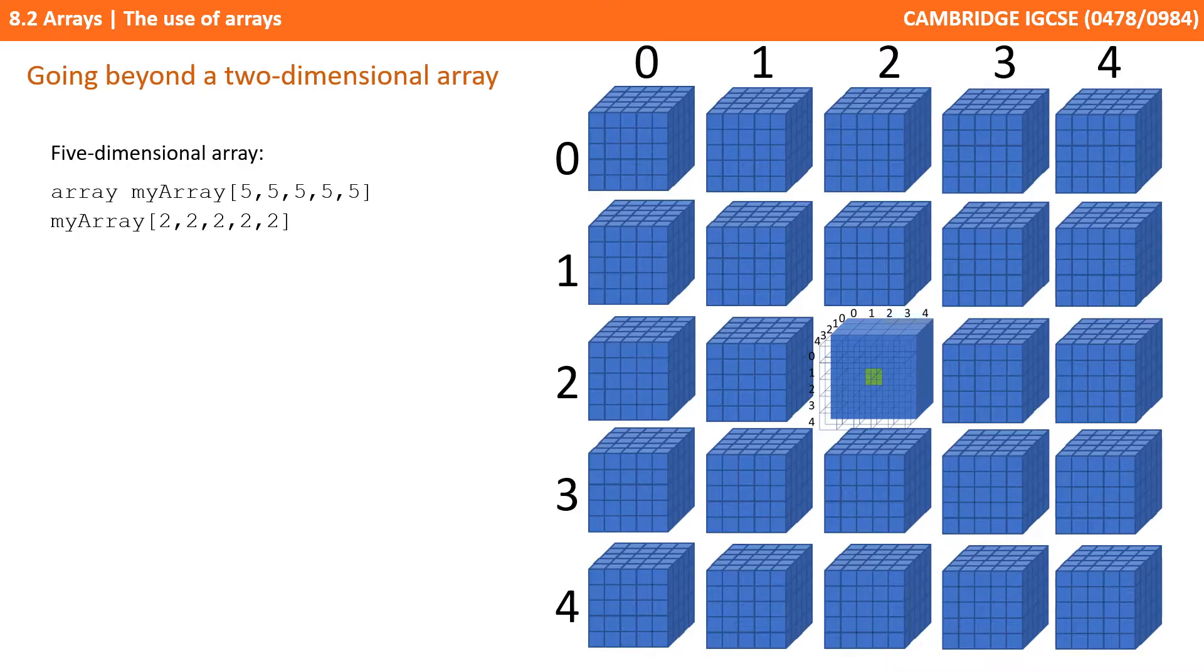Likewise, a fifth dimensional array is now just showing all the cubes arranged in a grid. Two of the indexes will be used to specify which row and column of the cube we want to be using. And then the next three indexes will be used to find the item within that cube. We can keep going on like this, but we think you've got the idea.